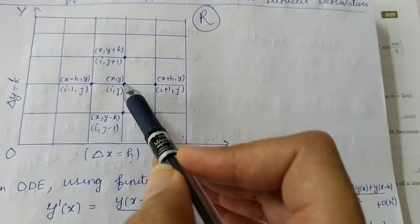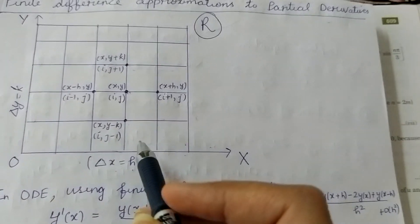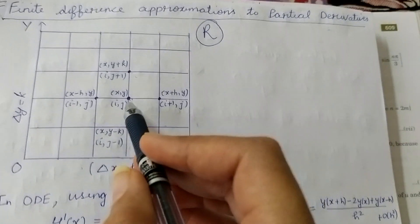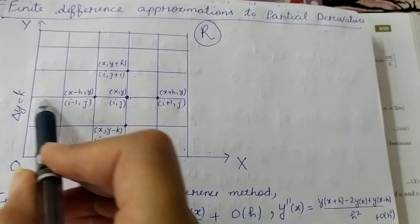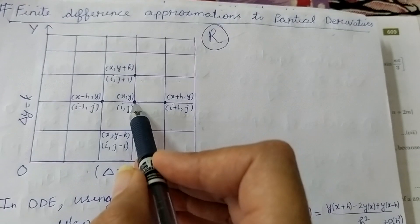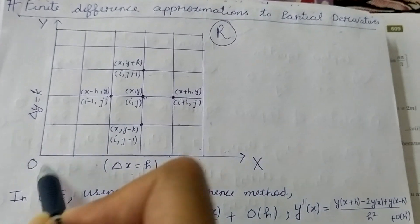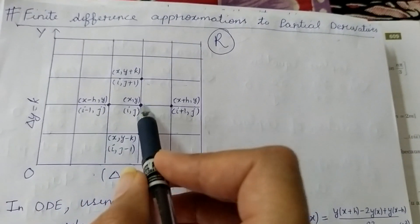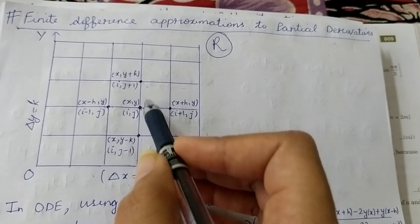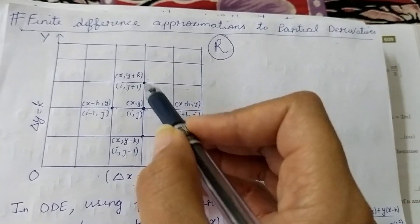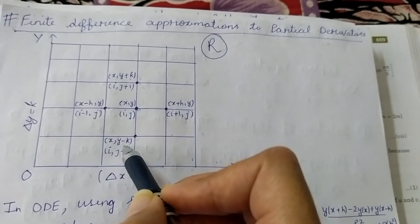For example, this point is (x, y). If I move to the next point on the right, there is an addition of h, so it becomes x plus h, and y remains the same. If I move to the left, there is a subtraction of h, giving x minus h. Similarly, moving upward adds k to y, and moving downward subtracts k from y.